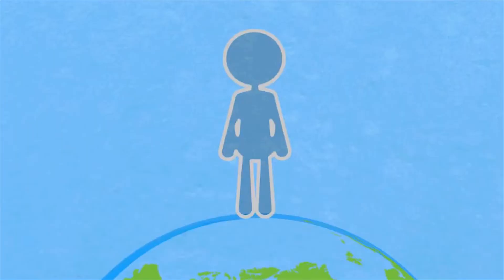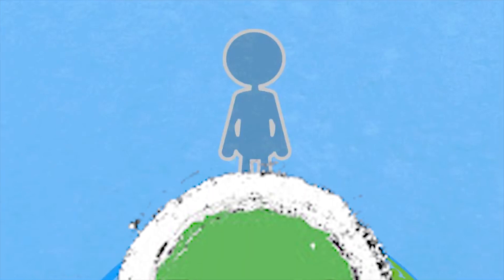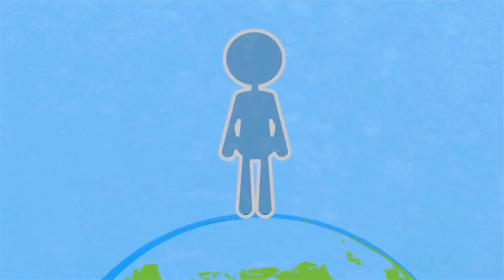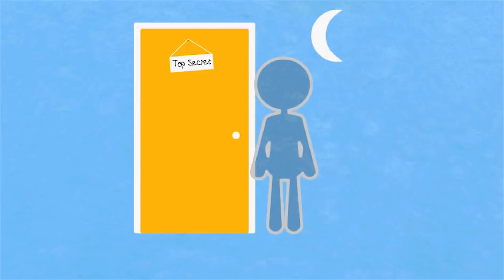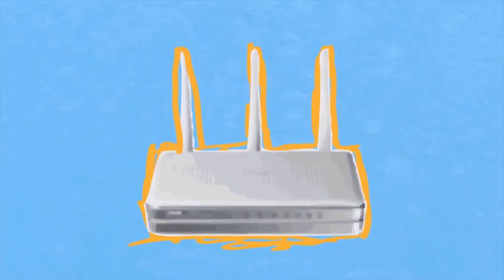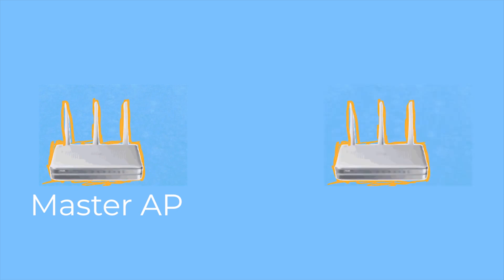Welcome to Top 10. In today's episode, let's have a look at how to configure DD-WRT in client mode. This setup is not a wired connection but a wireless connection between two routers — one router acts as a master access point and our DD-WRT connects to it and again acts as another access point.